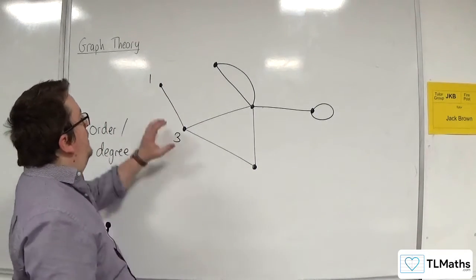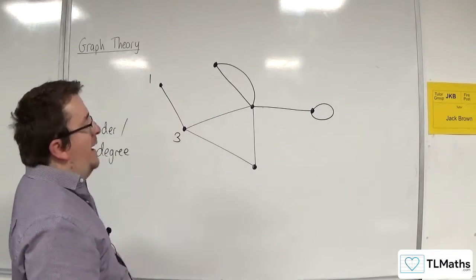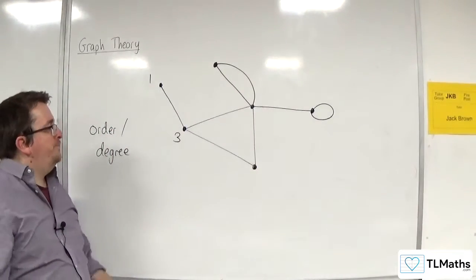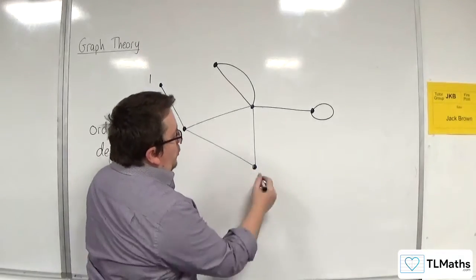So what we would refer to for these two is that these both have odd order because they're odd numbers. This one has order 2.